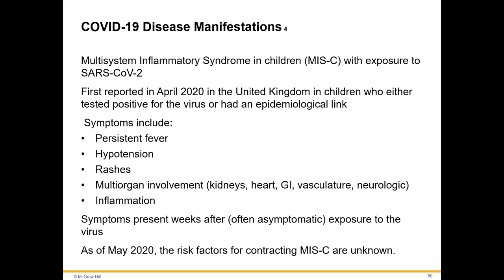Multi-system Inflammatory Syndrome in Children (MIS-C) with exposure to SARS-CoV-2 was first reported in April 2020. As of May 2020, the risk factors are unknown. Symptoms include persistent fever, hypotension (low blood pressure), and extreme rashes all over the skin. Multi-organ involvement includes the kidneys, heart, GI tract, vasculature, and neurological involvement along with inflammation. There haven't been too many cases reported, but it was a major concern early in the emergence of this virus.